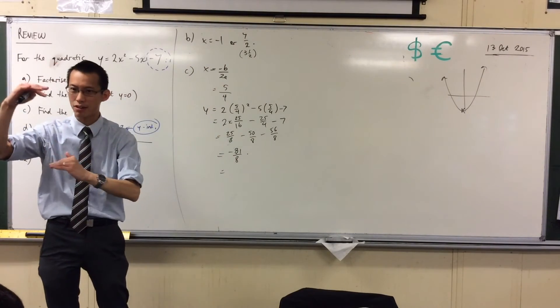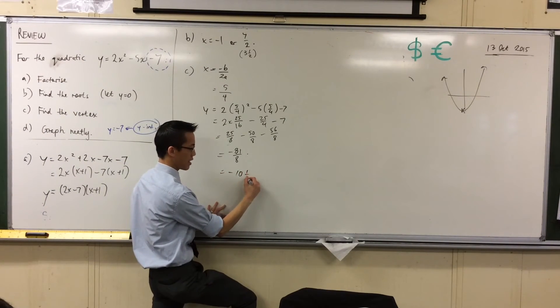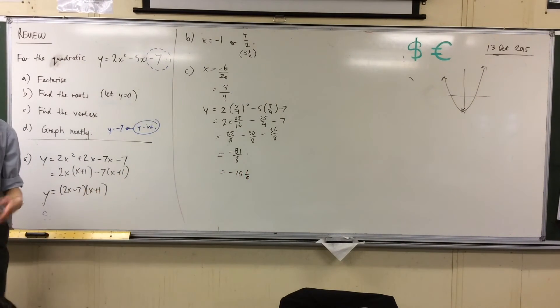I want to know how big numbers are in relation to each other. Now, I have no idea how 7 over 2 and minus 81 over 8, how they fit in terms of scale, right? But 3.5 and minus 10 and an eighth, those I do know. Like, whole numbers and their little fraction, I can work with those, okay? Alright, almost done.